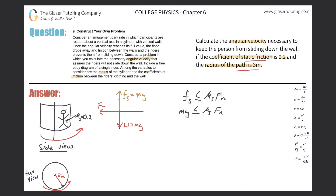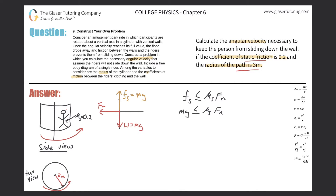Looking at the diagram, it seems unbalanced in the x-direction — there's a net force pointing to the left, toward the center. If there's a net force pointing to the center, that means there is an acceleration pointing to the center of the circle. That acceleration has a special name: it's called centripetal acceleration.